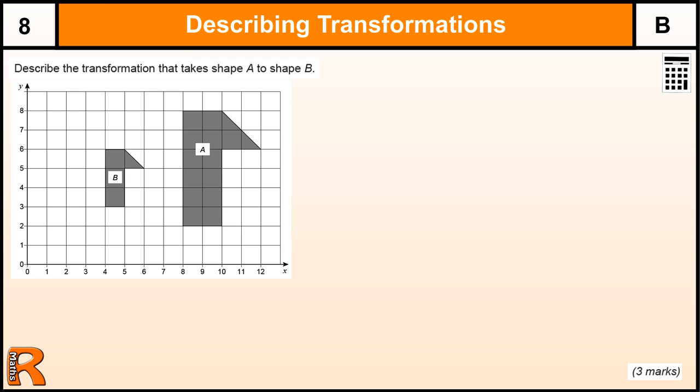So we can get a mark straight away by just saying it's an enlargement, and it is an enlargement even though it's getting smaller because the scale factor 2 to 1 is a half, it's shrinking down by a half.